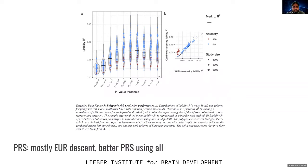One thing they did was assess the polygenic risk score and how good that polygenic risk prediction is at predicting who's going to get schizophrenia. In panel A, they look at different p-value thresholds, with liability R² on the y-axis. It improves a little as you consider a less stringent p-value threshold for making the polygenic risk score. They have 90 cohorts, doing validation on 89 left-out cohorts for predicting that score. I'm not super familiar with polygenic risk scores, but it looks okay to me.